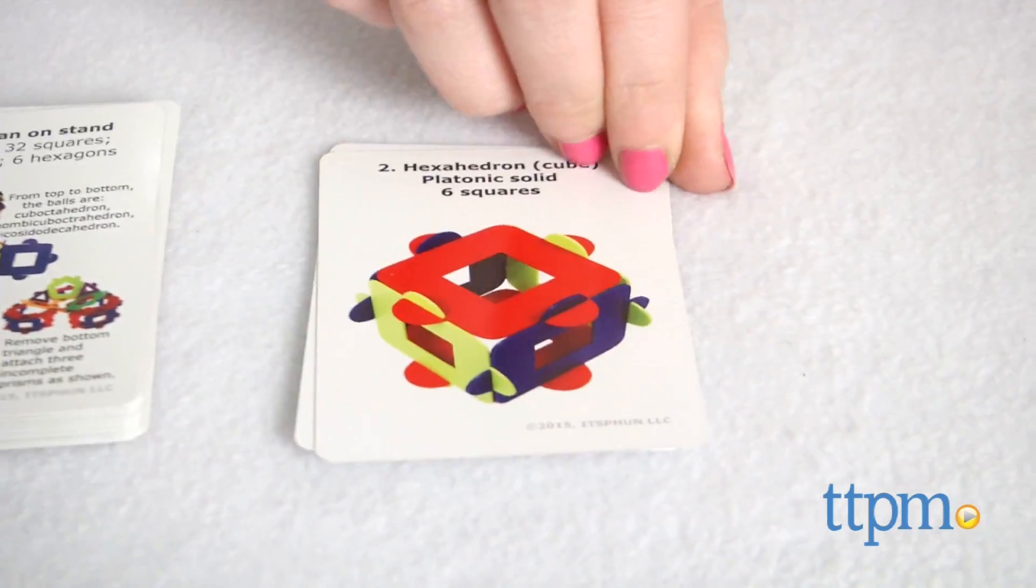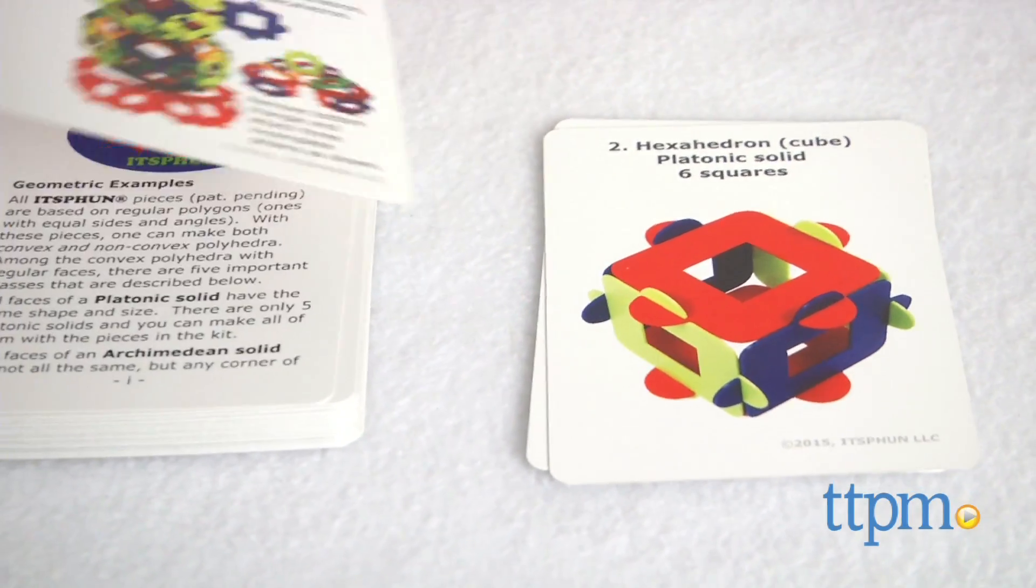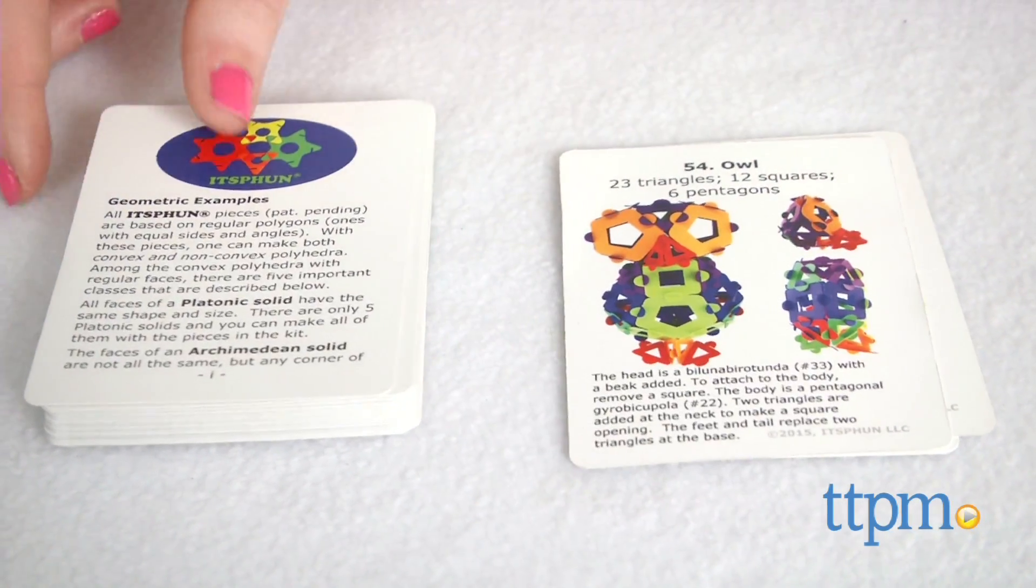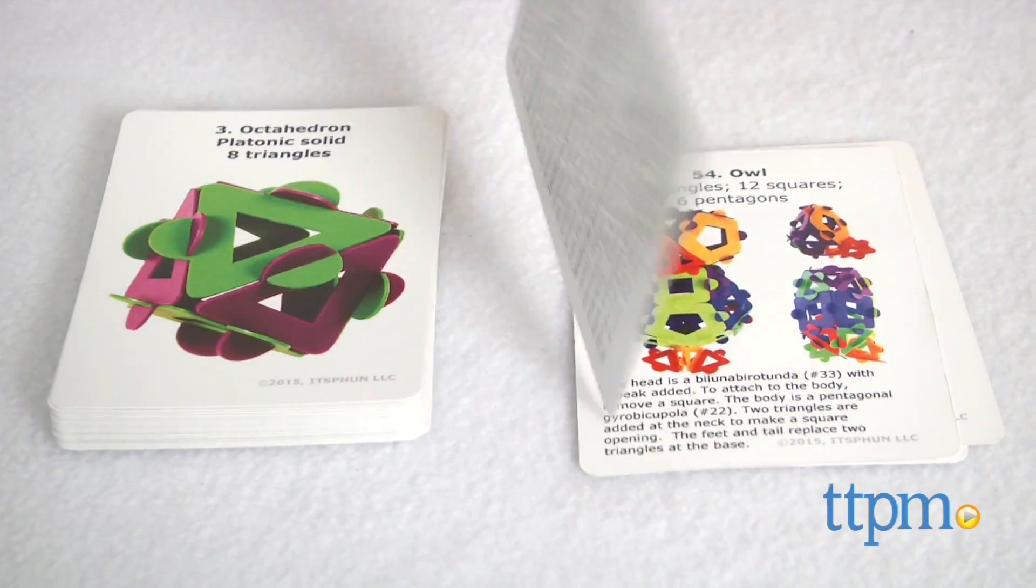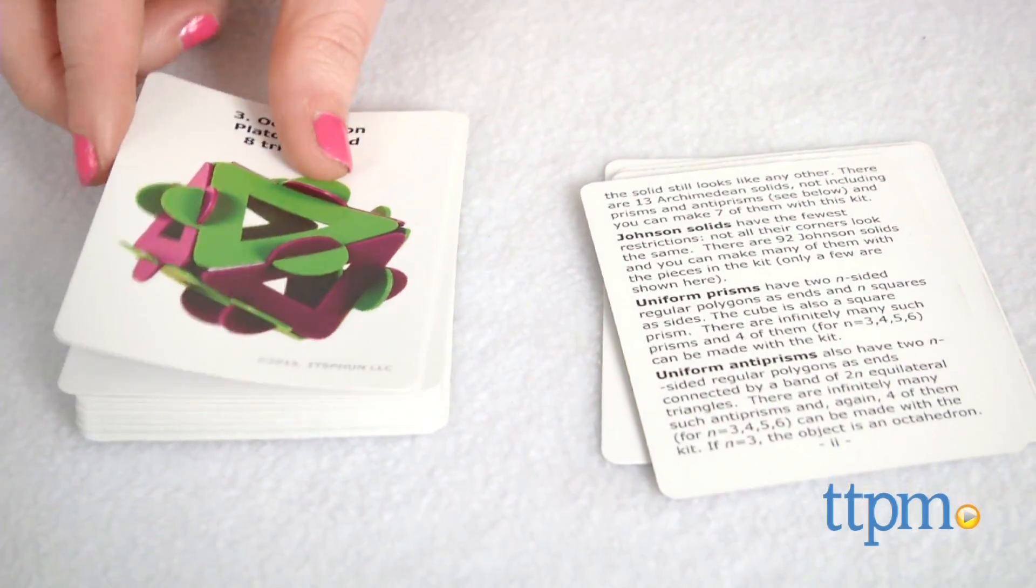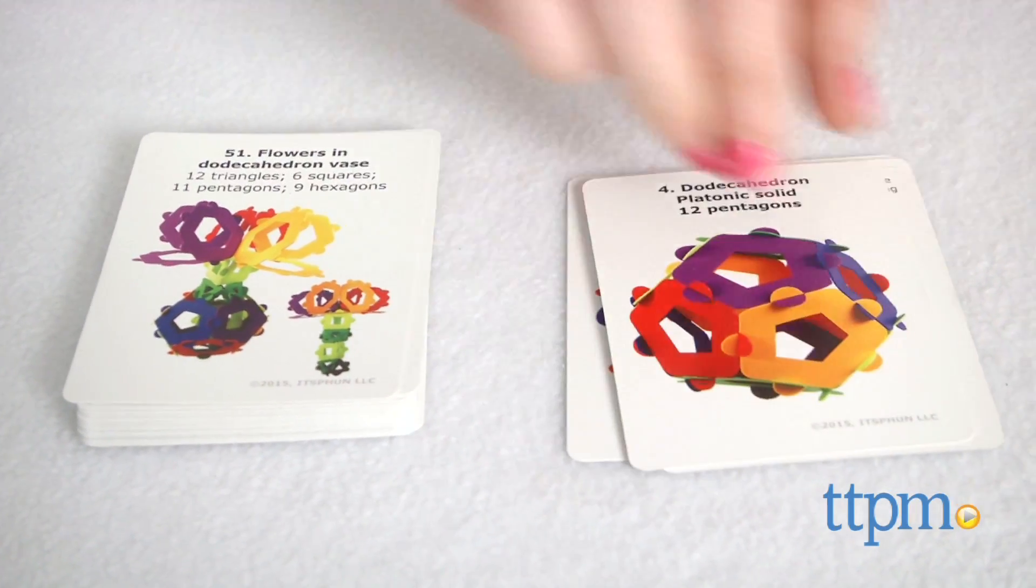Each card features an image of what the end result will look like, the name of the shape you are creating, so there's a bit of basic geometry involved, and the number of each type of piece you'll need to create the structure.